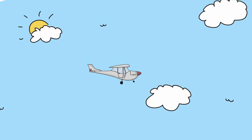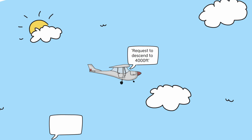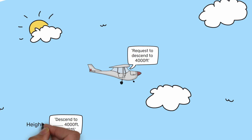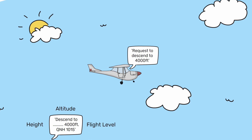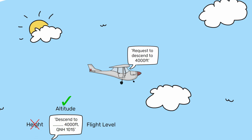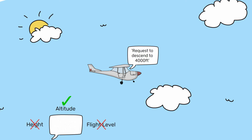So now let's test your knowledge and bring you back down to land. Let's say you request a descent to 4000ft and the controller says the following phrase. Which word should go in the blank space? The correct answer is altitude. The controller would say: descend to altitude 4000ft, QNH 1015, because you are on the QNH.